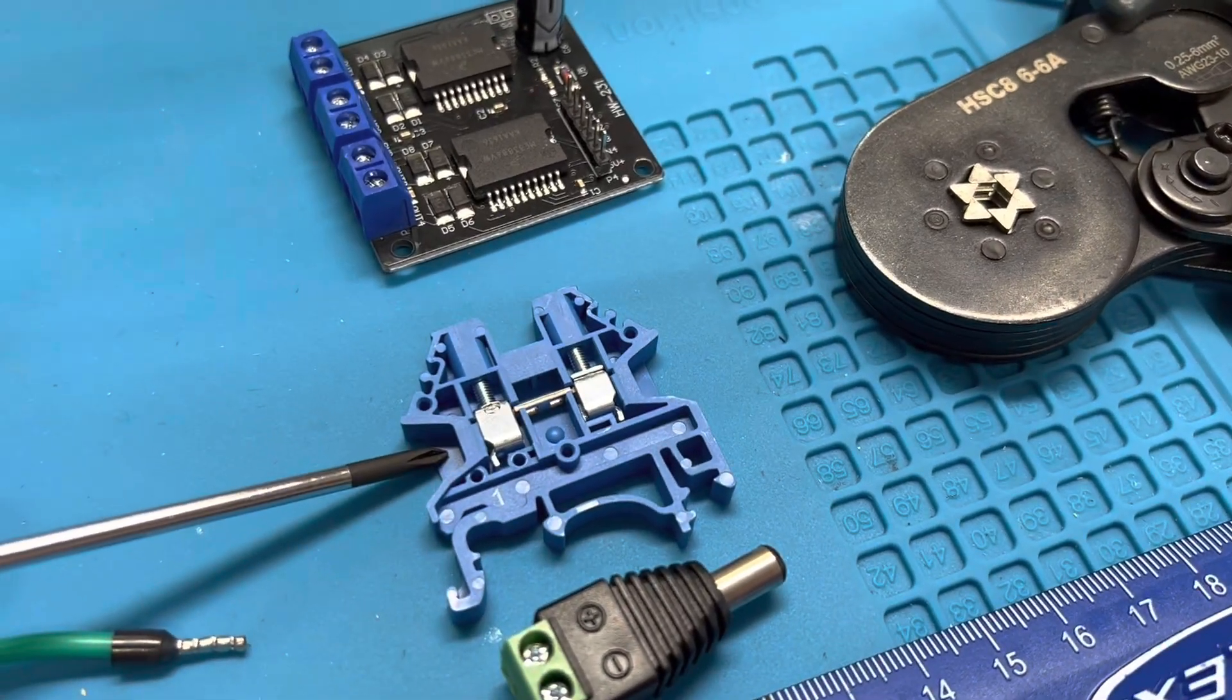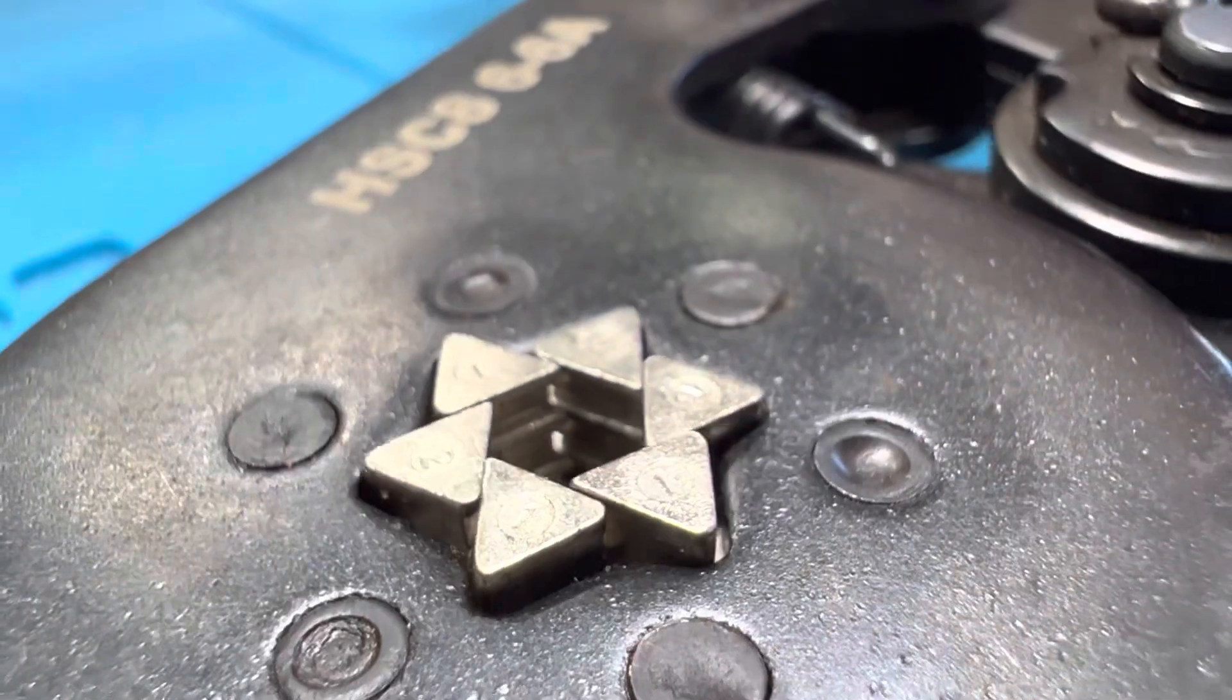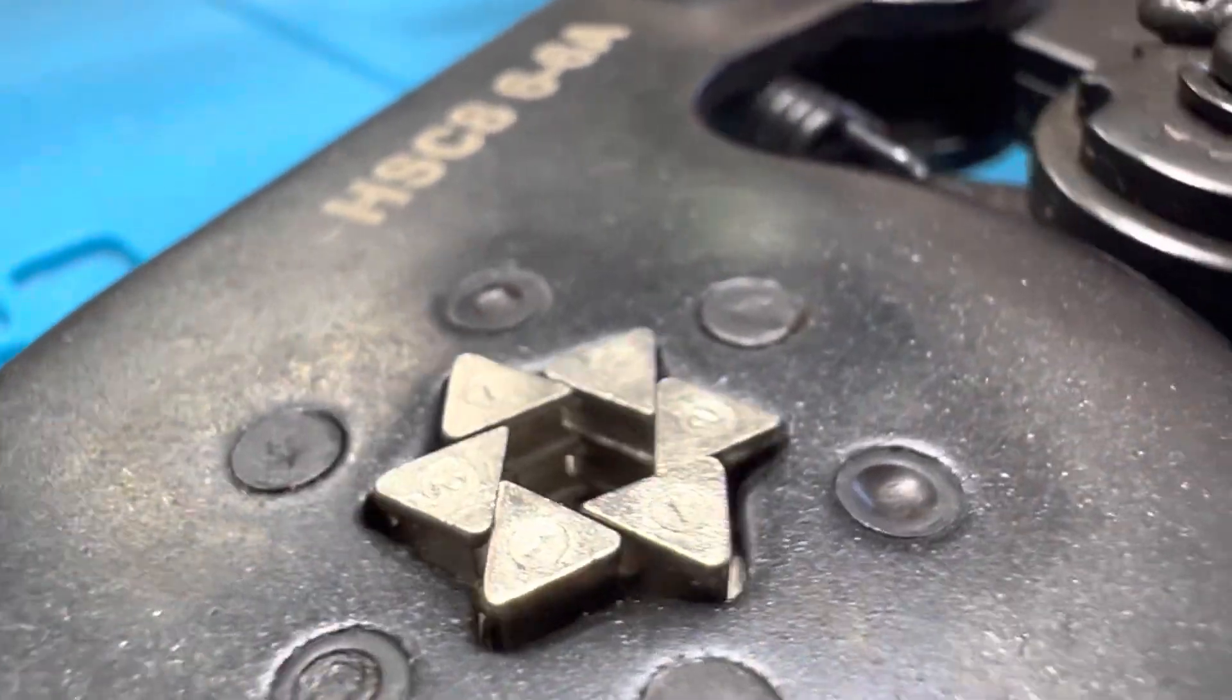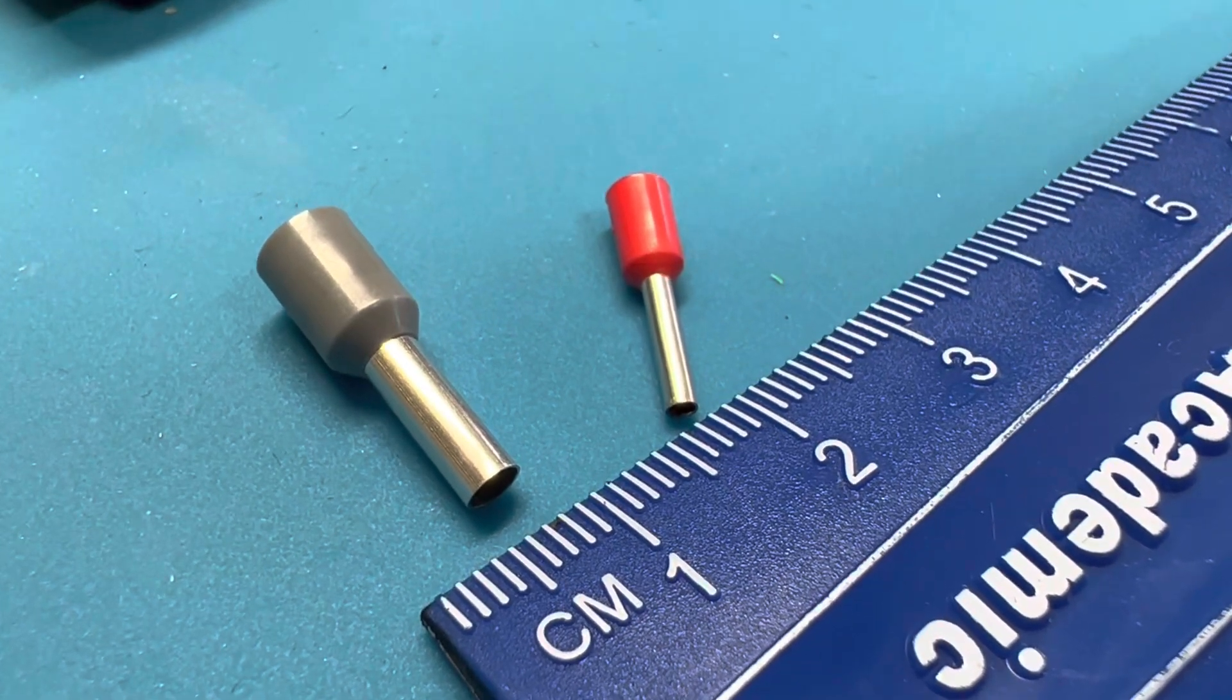These DIN terminals and these screw terminals. This crimper has a fascinating closing action and that makes it compatible with multiple sizes of ferrules.